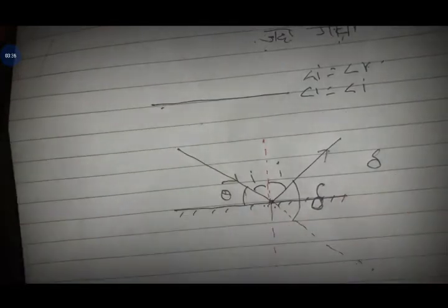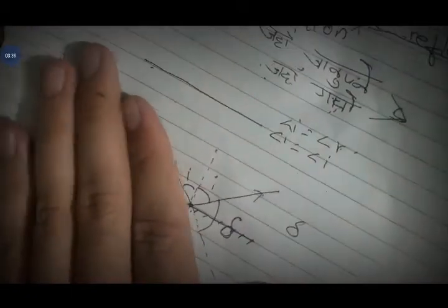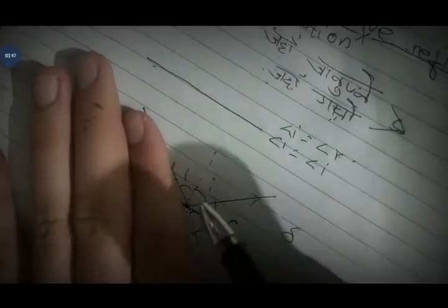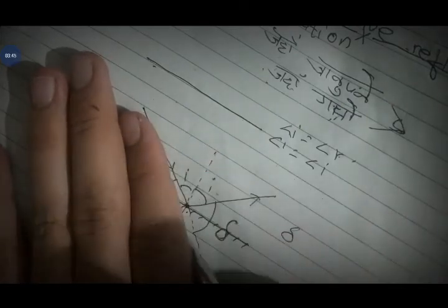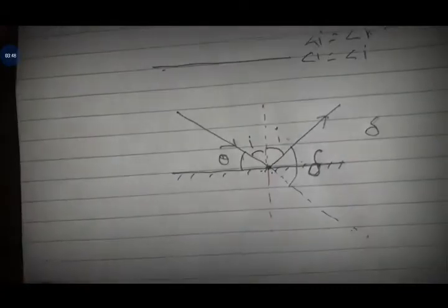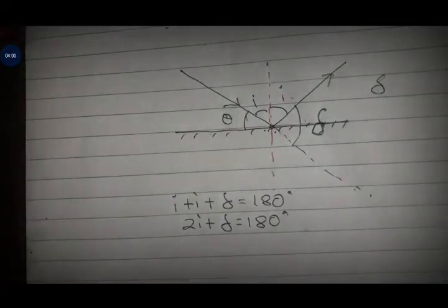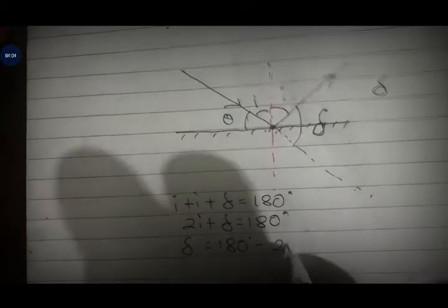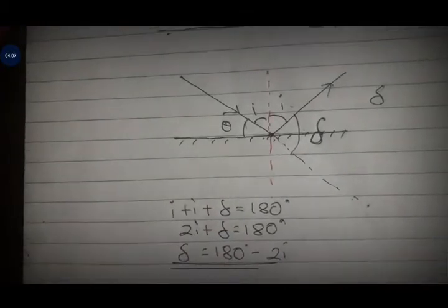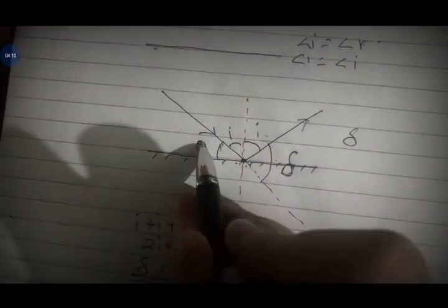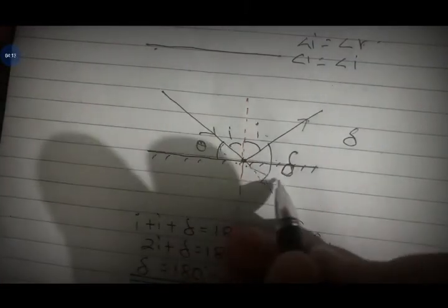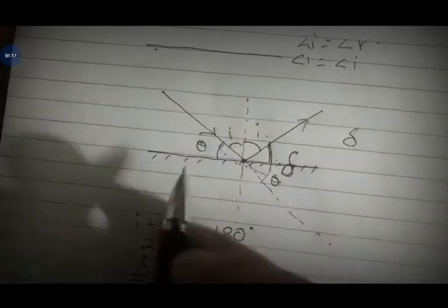The glancing angle and the straight line: i plus i plus the deviation angle equals 180 degrees, since angles in a straight line sum to 180. So deviation equals 180 minus 2i. Using theta for the glancing angle, vertically opposite angles give us theta, so deviation equals 180 minus 2 theta.